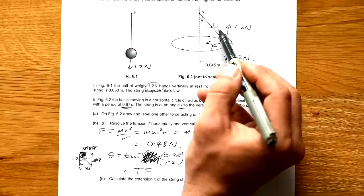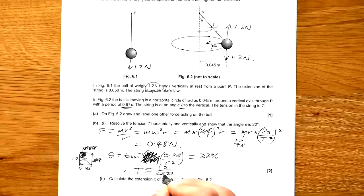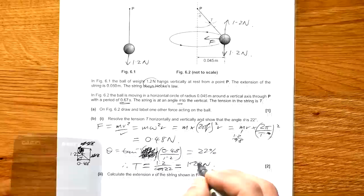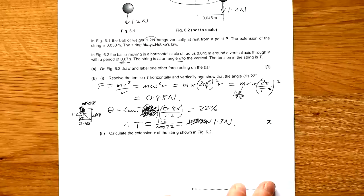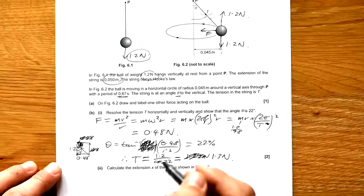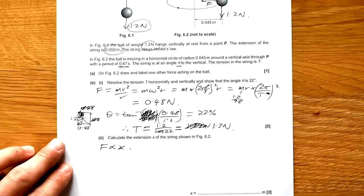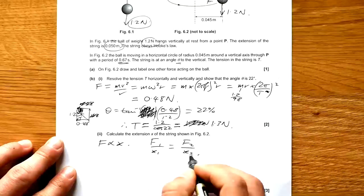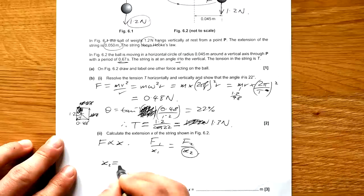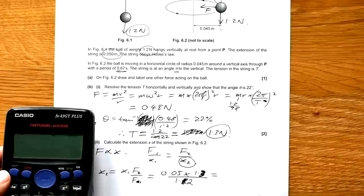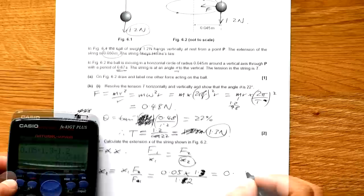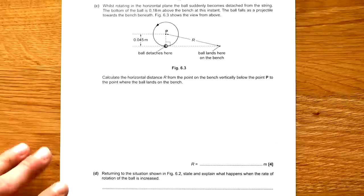We're looking for this angle here. So it's going to be the inverse tan of 0.48 divided by 1.2. And that gives us 22 degrees, like they said. And then we want to find T. We can use any of these now. Let's go with turning through the angle here. So that's going to be 1.2 divided by cos 22. Turning through the angle is cos. If you don't know where I got that from, have a look at my easy vectors trick video. And that gives us 1.3 Newtons. Calculate the extension X of the string shown in figure 6.2. So with just 1.2 Newtons, we had an extension of that. So we know that force is proportional to extension. So we can say that F1 over extension 1 equals force 2 over extension 2.